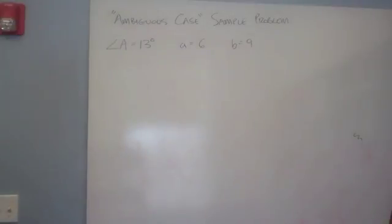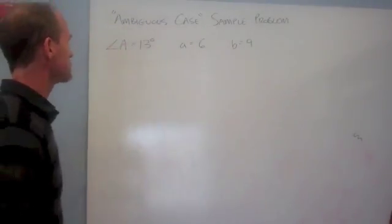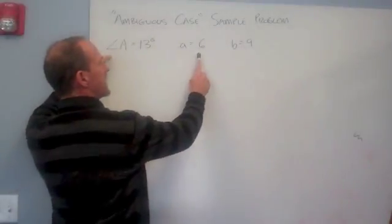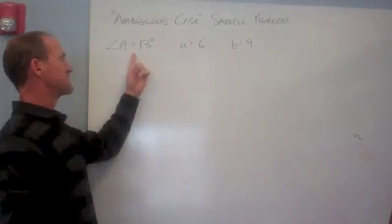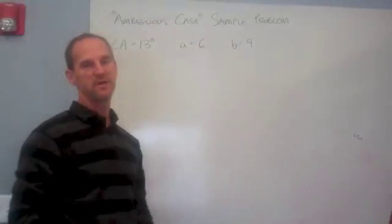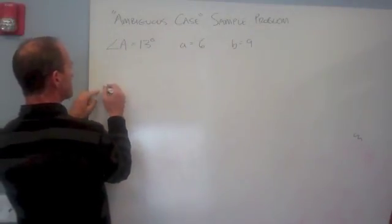Alright, we have a sample problem here that's going to illustrate how to do one of these ambiguous cases. How do you know it's an ambiguous case? Because we have an angle and a side and a side. And this is not the included angle, because if it was, it would be C, because C would be trapped in between A and B. So you can kind of look at the letters and get a sense of that. It does really help to have a drawing.